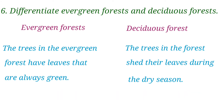Sixth question: differentiate Evergreen Forest and Deciduous Forest. We have different plants in Deciduous Forest. Evergreen Forest — the trees in the Evergreen Forest have leaves that are always green. Deciduous Forest — the trees in the forest shed their leaves during the dry season.